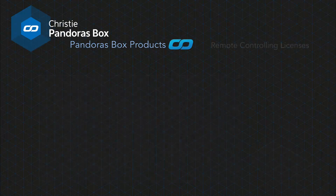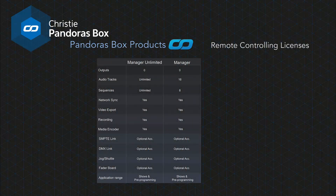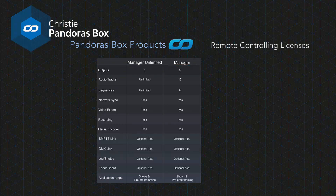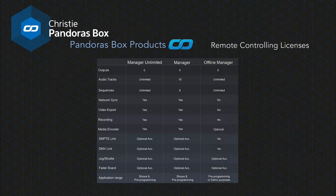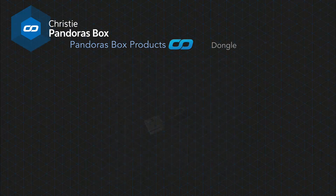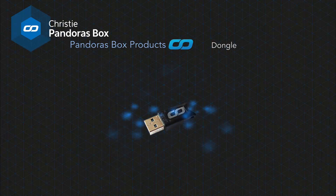The third license type is the Manager license — a specialized license for show control that can be used to drive larger events. It can only be used to control a show and is not able to play videos in full screen; it has no output capabilities. A special type is the Offline Manager, an inexpensive version used only for pre-programming that cannot be used in a show environment. All licenses are stored on a USB key called a dongle, which must be attached to the machine while running the software.